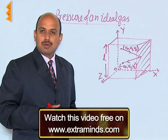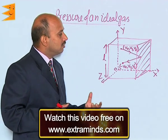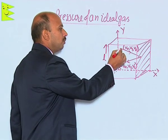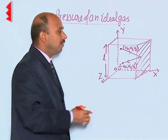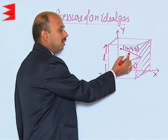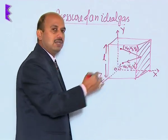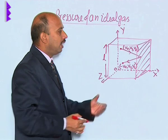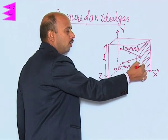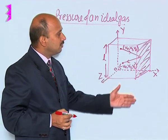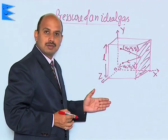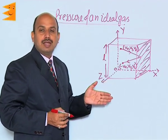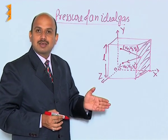So now we have to calculate the pressure exerted by an ideal gas. I have taken a molecule of the gas which has velocity components Vx, Vy, and Vz, and this molecule is colliding with this wall, which is in the YZ plane. So we are taking the component of velocity only along the x-axis, that is Vx.